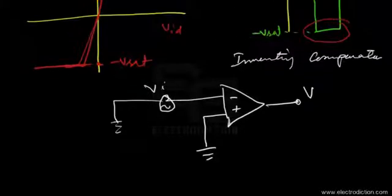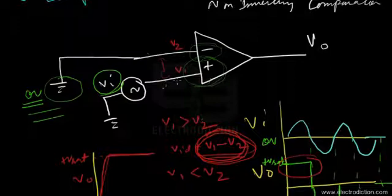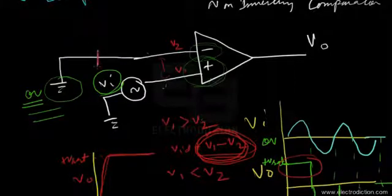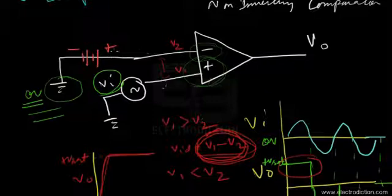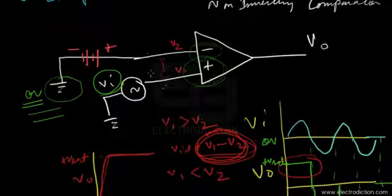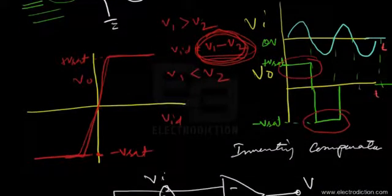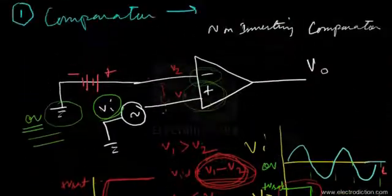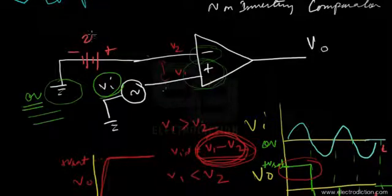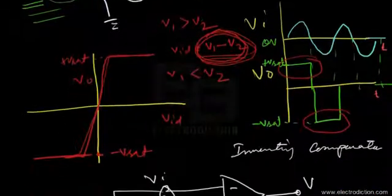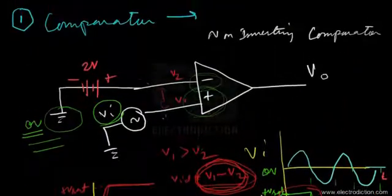It's not necessary that we have to ground one of the inputs of the op-amp. We can also incorporate a reference voltage. By connecting a DC voltage source that remains constant with respect to time, we can keep the voltage level fixed at any value we want. If we assume a voltage level kept fixed at, say, 2 volts other than the ground voltage, then the comparison would take place with respect to 2 volts.